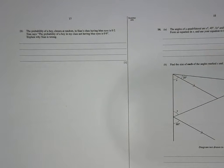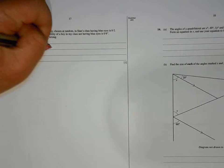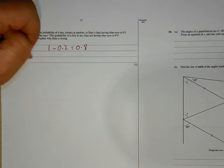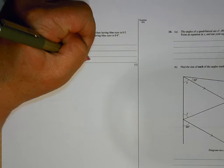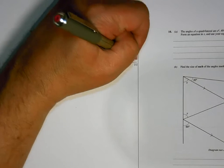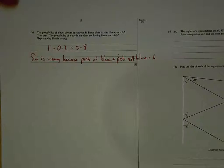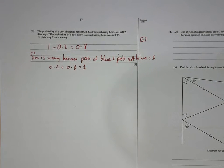Okay, the probability of a boy chosen at random in Sian's class having blue eyes is 0.2. Sian says the probability of a boy in my class not having blue eyes is 0.9. Explain why Sian is wrong. Well Sian is wrong because they have to add up to 1. Total probability of 1, so that needs to be 1 less 0.2 equals 0.8. So Sian is wrong because probability of blue plus prob not blue must equal 1. 0.2 plus 0.8 equals 1. Okay, so that's the sort of thing they're looking for you to explain there.